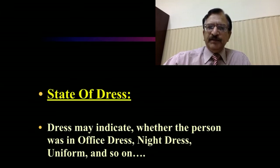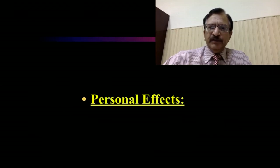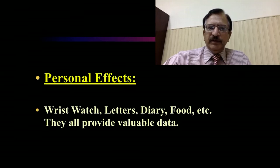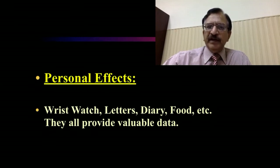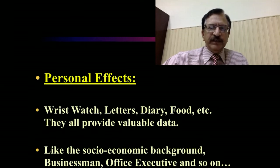The state of dress of the individual: dress may indicate whether the person was in office dress, night dress, uniform, and so on, giving an idea of the state in which the person was found. Personal effects such as a wrist watch, letters, diary, and food lying in the circumstances all provide valuable data regarding the time of the incident of that particular crime. Socioeconomic background — the businessman, the office executive — these personal habits and findings give us an idea about the background of the individual.